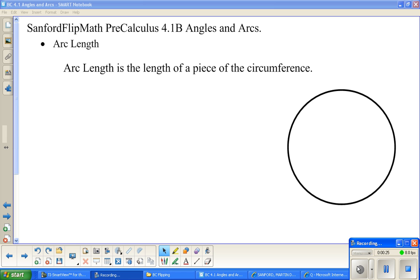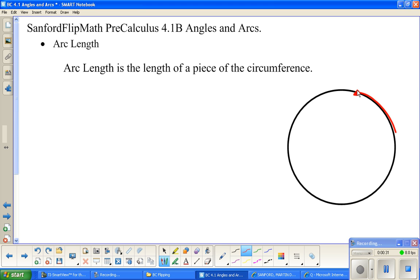To start off, arc length is really just a piece of the circumference of a circle. So if I go from here to here, that little guy right there is an arc. Arc length would be measured just like you measure any length, in inches or centimeters or feet or miles or whatever. Arc length is the length of an arc.